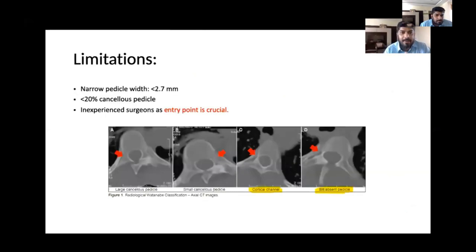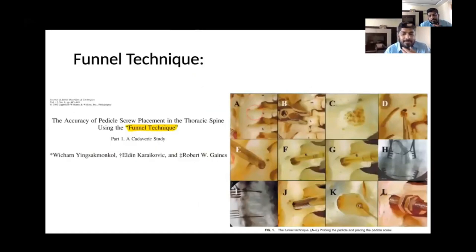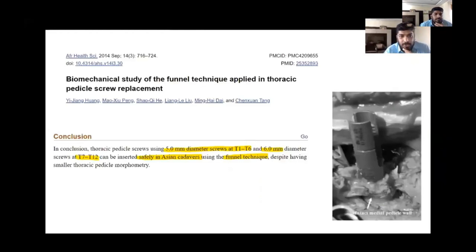The limitations include very, very narrow pedicles with less cortical vertebrae. For the final technique, we use the probe at the entry point, burr it, then use the curette rounder to make it a funnel. You go very, very slow at the thoracic vertebrae and this can be very useful.